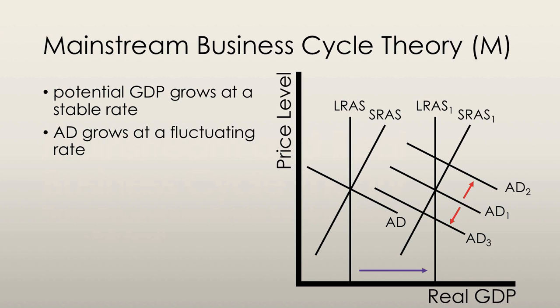Due to sticky wages, AD moves to AD2, growing at a faster rate than long-run aggregate supply. Thus, short-run macroeconomic equilibrium is at the point at which AD2 and SRAS1 intersect, and an inflationary gap opens up. If AD increases at a slower rate than potential GDP, for example to AD3, then a recessionary gap opens up. However, if AD grows in sync with long-run aggregate supply, then we would maintain long-run macroeconomic equilibrium, and AD would shift to AD1.